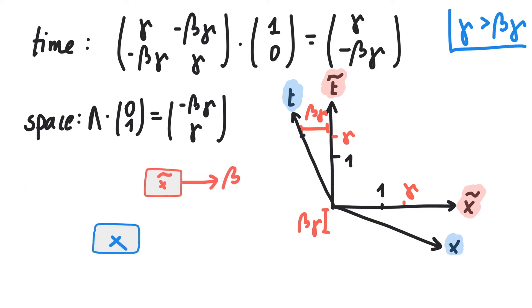Even though the moving observer moves to the right from our point of view, he sees us moving to the left from his point of view.